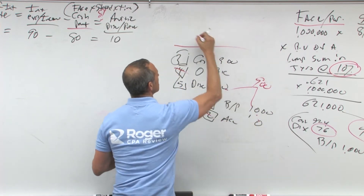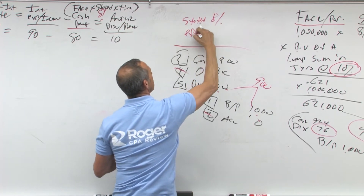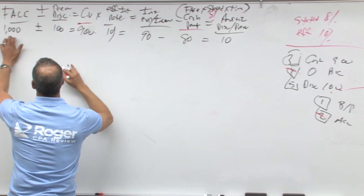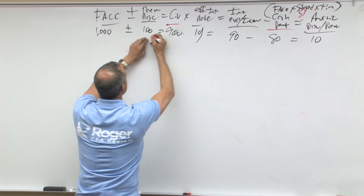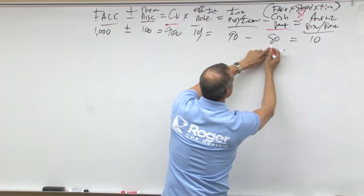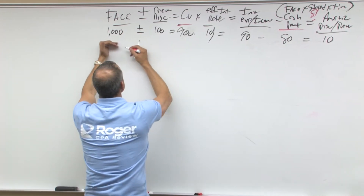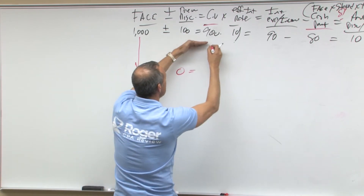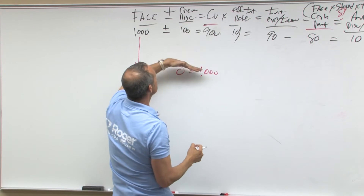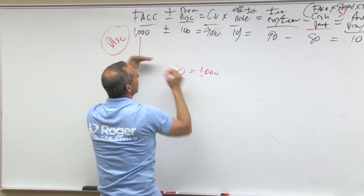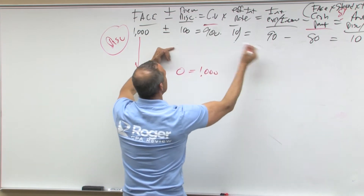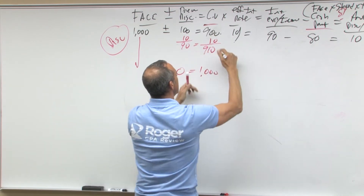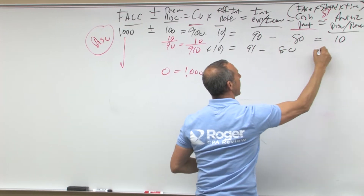Setting that up: a million dollars minus the discount gives us a carrying value of 900. At 10% that's 90, minus 80 cash is 10 amortization. This face doesn't change — it stays a million — but the discount has to go from 100 down to zero, because the carrying value has to get bigger up to a million. So in a discount, it starts small and gets bigger. You take the 10 amortization: a million minus 90 discount equals 910. Then 910 at 10% is 91, minus 80 is 11.